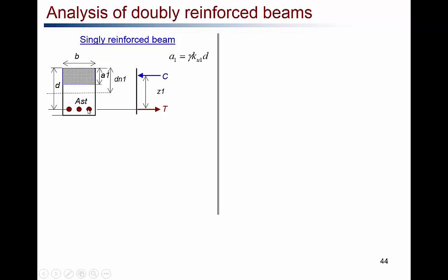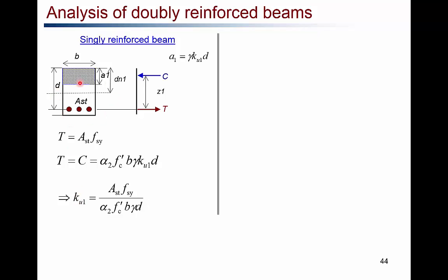The tension force T in the steel equals AST multiplied by the yield strength FSY. For horizontal equilibrium, T must equal the compression force C, where C is the volume of the equivalent stress block: alpha2·FC'·B·gamma·KU1·D. Equating these, KU1 for the singly reinforced beam equals AST·FSY divided by the concrete compression parameter.